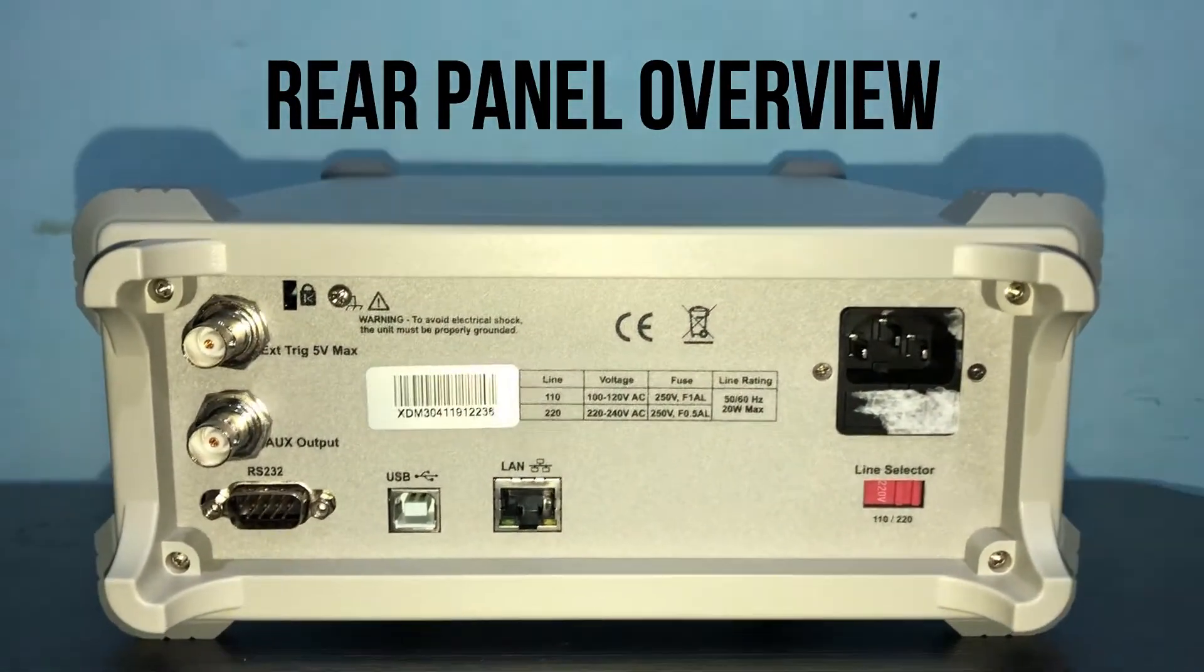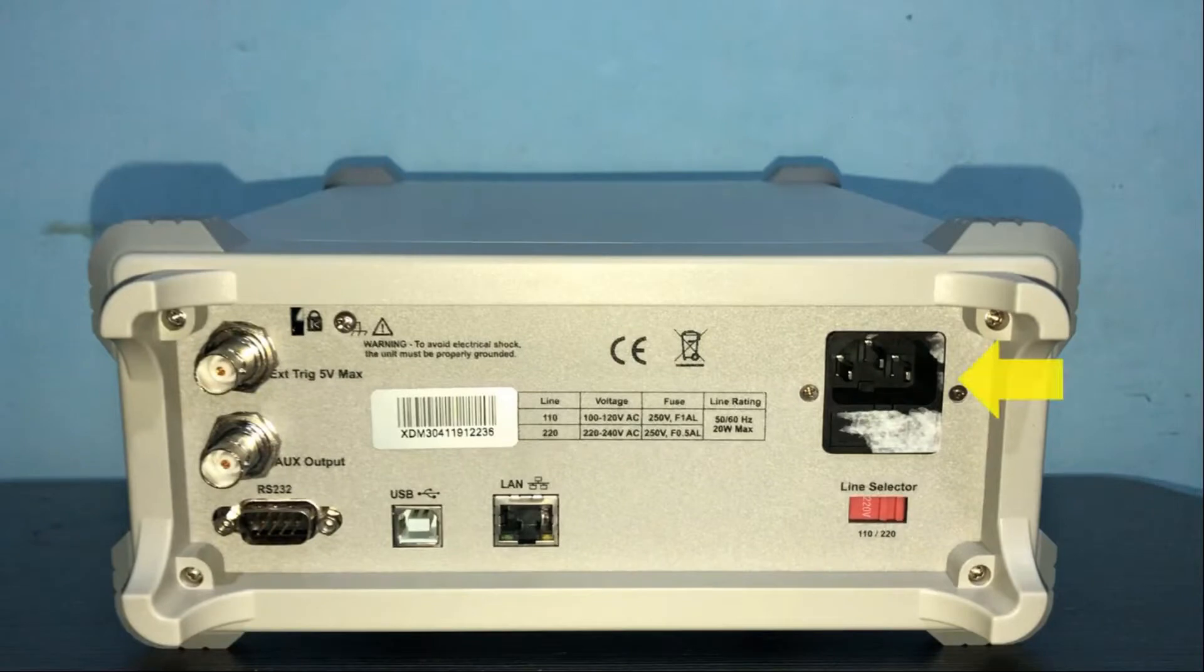Rear panel: AC mains input with line fuse, AC main line voltage selector, AC mainline rating, instrument serial number, local area network, USB Type B connector, RS-232, external trigger input, auxiliary output connector.